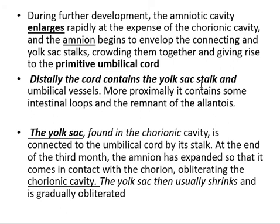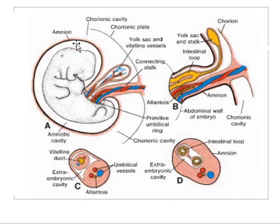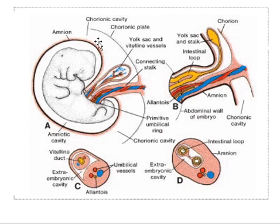The distal part of the cord contains the yolk sac and umbilical vessels. More proximally it contains some intestinal loops and remnants of the allantois. At the end of the third month, the amniotic cavity expands so that it comes in contact with the chorion, obliterating the chorionic cavity. The yolk sac then usually shrinks and is gradually obliterated.